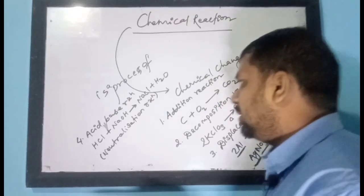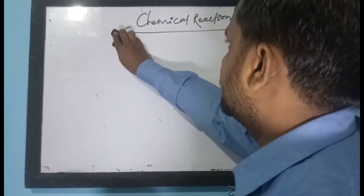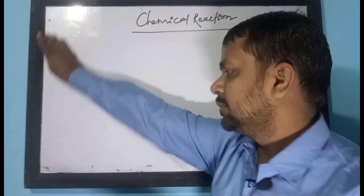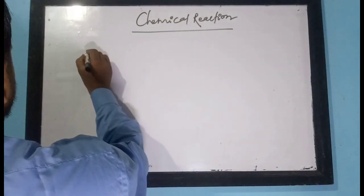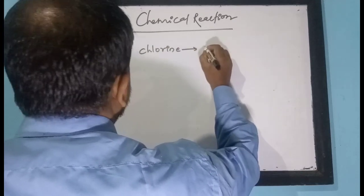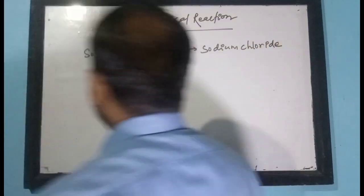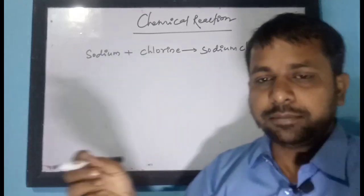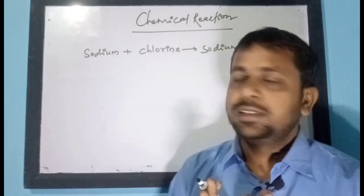Let us see some other information related to chemical reactions. Suppose I write the reaction: sodium plus chlorine gives sodium chloride. In this reaction, sodium and chlorine are being reacted and they are producing sodium chloride. Here we are going to understand some terms related to the chemical reaction.